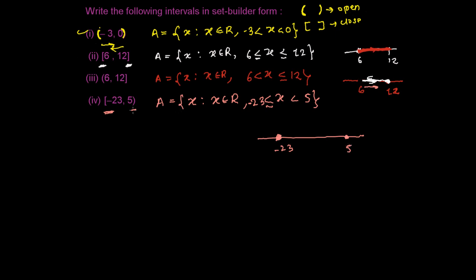The question says all numbers smaller than 5 are possible but not 5 itself. Similarly, all numbers greater than or equal to 23 — including 23 — and all numbers bigger than 23 but less than 5 — not including 5 — are in this set. The number line shows this is a subset of the real numbers.